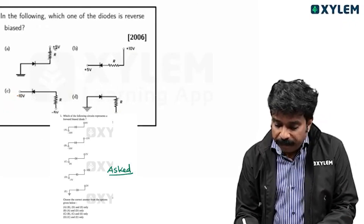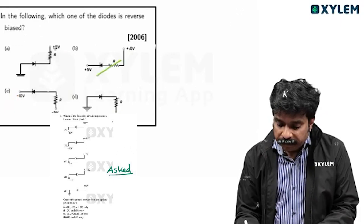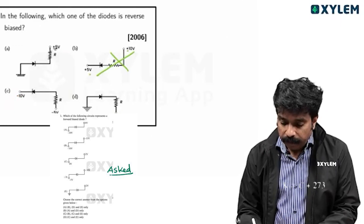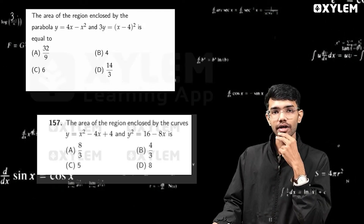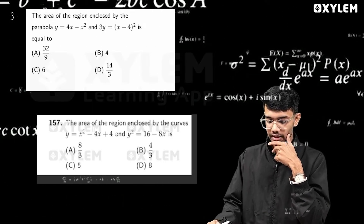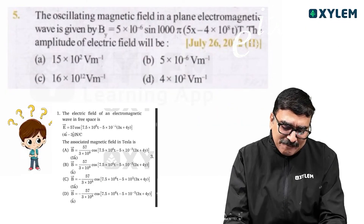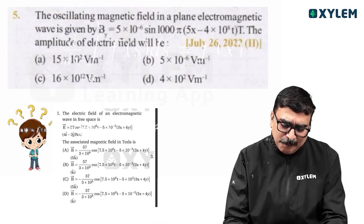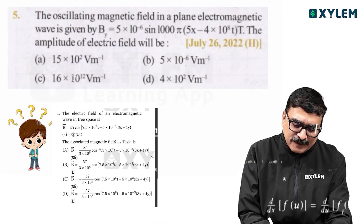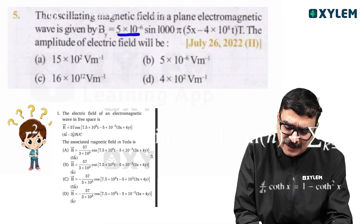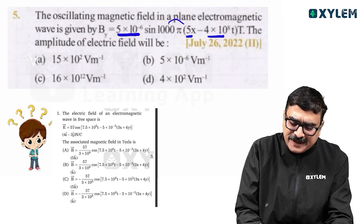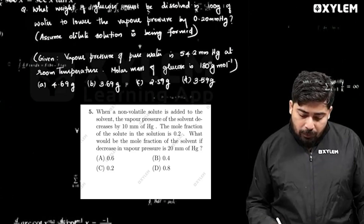What is B? B forward-wise? High and low. Parabola — the area of the region enclosed by the parabola. The oscillating magnetic field in a plane electromagnetic wave is given by B0, K and Omega.